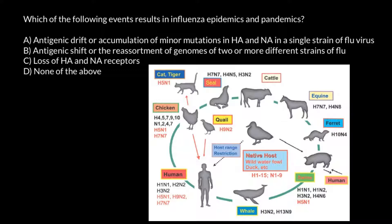When a virus mutates within our species, this usually causes epidemics. But when a virus jumps from other animals we have contact with — like domesticated birds that get it from wild birds, and pigs — we usually get pandemics. An epidemic is a disease that causes damage in a certain area, limited to a country, region, or even a continent, while a pandemic is a disease with consequences on a global level, where all countries and all people are susceptible.